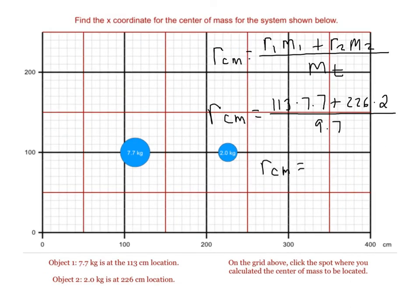For this system that we have here, we go with the radius to object 1 of 113 times 7.7 for its mass, then we add that to distance to the next particle times its mass, and then we divide by the total mass.